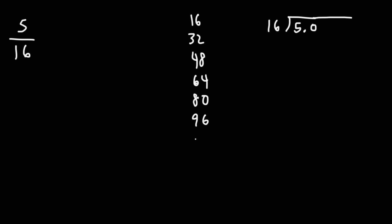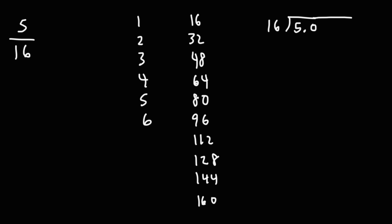96 plus 16 is 112, and then another 16 becomes 128, 144, 160. Once you get to 10, that's basically enough. Now how many times does 16 go into 50? 16 goes into 50 three times — the highest multiple of 16 just under 50 is 48. So we're going to put a 3 here. Don't forget the decimal. 16 times 3 is 48.